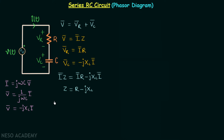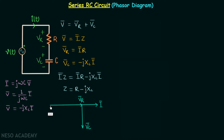We now have everything to draw the phasor diagram. Taking the current phasor as the reference, VR phasor has the same phase angle as I phasor but lesser magnitude. VC phasor lags the current phasor by 90 degrees, and the vector sum of VR and VC phasors gives V phasor. The angle between the net voltage phasor and current phasor is the power factor angle theta.